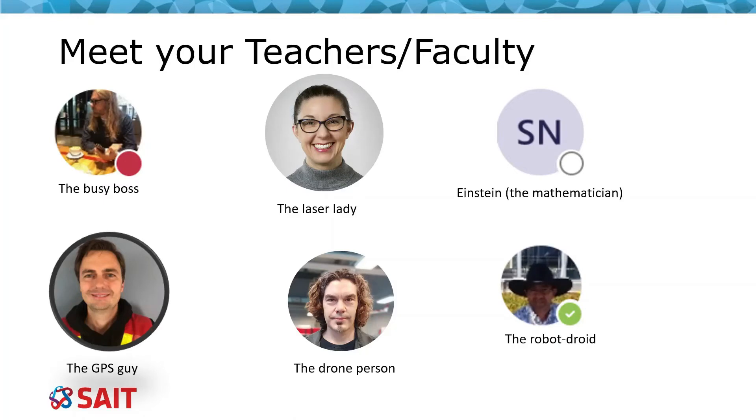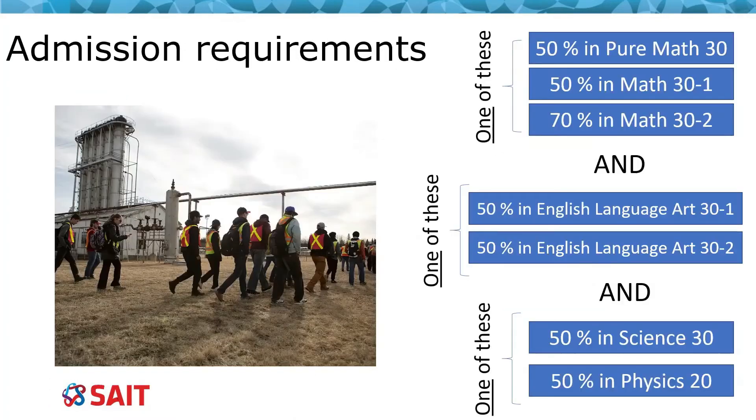For admission you need to have one in each of these categories: math, English language art, science or physics. You can also apply with anticipated marks and later you will be asked to upload your formal transcript once you get it.